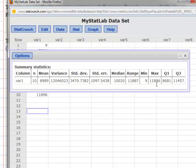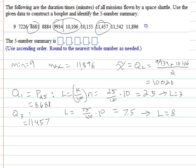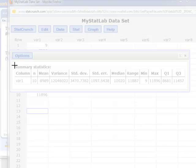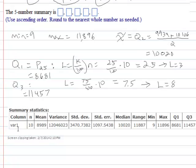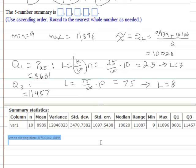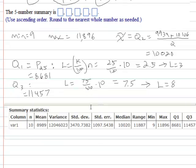And we get our five number summary there. Min is 9, max is 11,896, and so on. So, just for reference here, paste that in there. And our five number summary is all right here. Same numbers we just got.